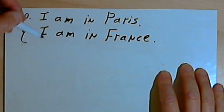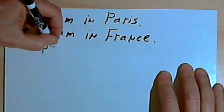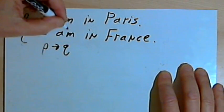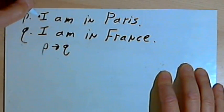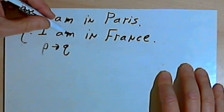Now we can combine both of these into a single conditional statement. If P, then Q. Or I could read that as if I am in Paris, then I am in France.